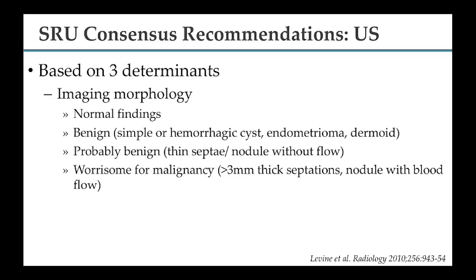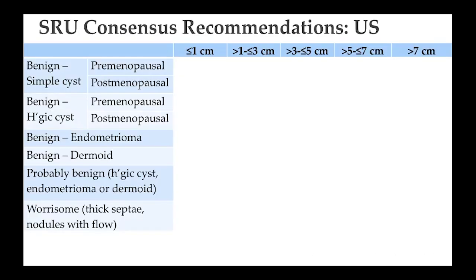Under the benign category, lesions include simple or hemorrhagic cysts, endometrioma, or dermoid. Probably benign includes lesions with thin septations or a nodule without flow — you think it's benign but aren't quite sure. Worrisome lesions have septations more than three millimeters thick or nodules with blood flow. The second and third determinants are menstrual status and lesion size.